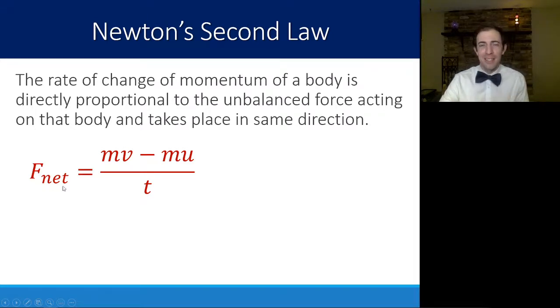Momentum is mass times velocity. So the change of momentum is the final momentum, mass times final velocity, minus the initial momentum, mass times initial momentum. So that's the momentum it ends with, subtracted by the momentum it started with to get the change. To find the rate of change, you just divide that change by t, the time.